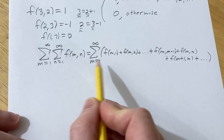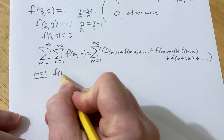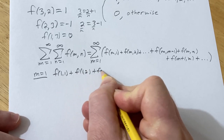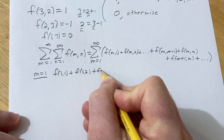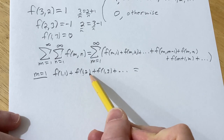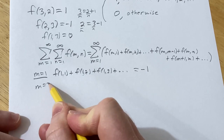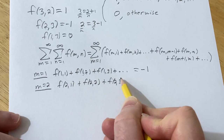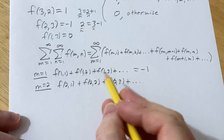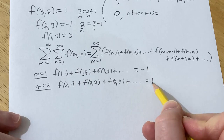For m = 1: the inner series is f(1,1) + f(1,2) + f(1,3) + … We know f(1,1) = 0, and f(1,2) = −1 since 1 = 2 − 1, so the first component is exactly one less. All other terms are zero. So the inner sum for m = 1 is −1. For m = 2: the series is f(2,1) + f(2,2) + f(2,3) + … Here f(2,1) = 1, f(2,2) = 0, f(2,3) = −1, and the rest are zero. So 1 + (−1) = 0.